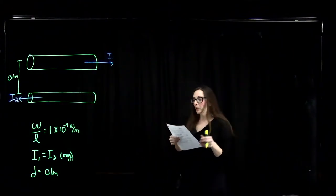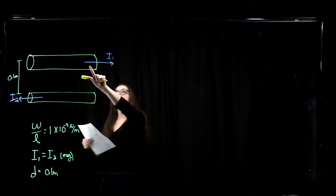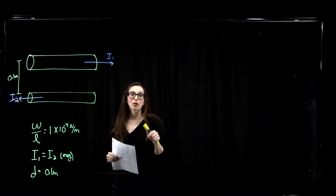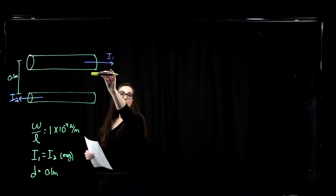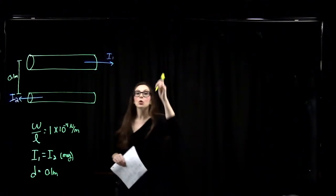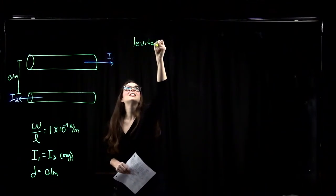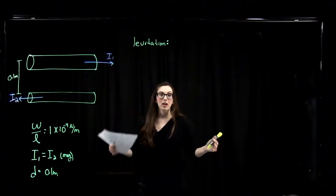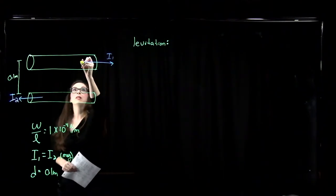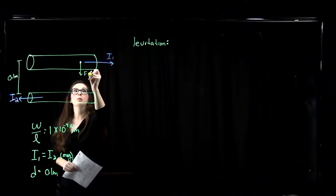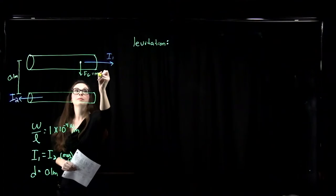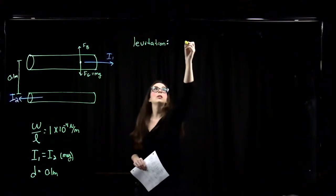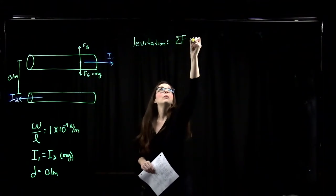The sum of the gravitational force and magnetic force on the upper wire is zero — meaning the upper wire is levitating. We need to find the current in the wires. Levitation occurs only when the sum of all forces on the top wire is zero. The free body diagram shows the gravitational force pointing down and the magnetic force acting upward, so F_B minus F_G equals zero.